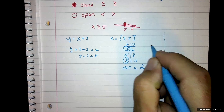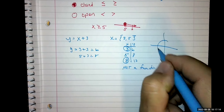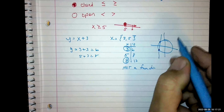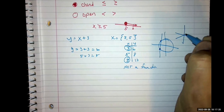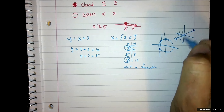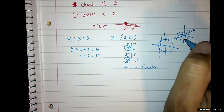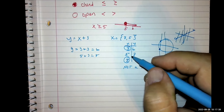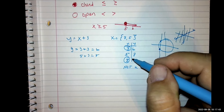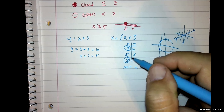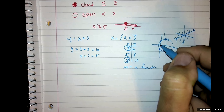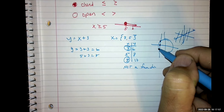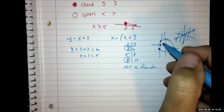Another way to test is the vertical line test: draw a vertical line on a graph, and if it touches the shape twice, it's not a function. If it only touches once, it is a function. So: if X repeats, not a function; if all X values are different, it's a function. Can Y repeat? Yes — we don't care if Y repeats, only if X repeats. That's what the vertical line test checks — if a vertical line hits two points with the same X coordinate.